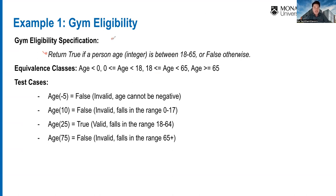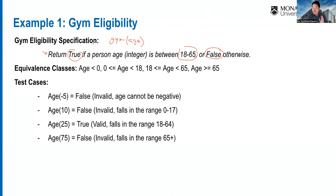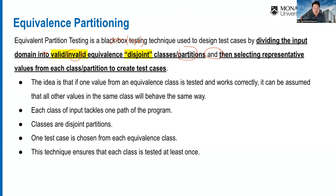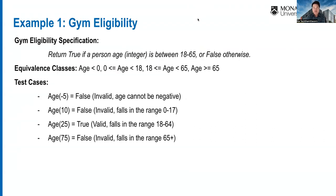Let's go through an example. Consider a gym eligibility function that takes age as an integer and checks whether a person can apply for membership. The gym is only eligible for a person aged between 18 and 65 — it should return true if eligible, false otherwise. We want to divide the input domain into valid and invalid equivalent classes and select representative values from each class.